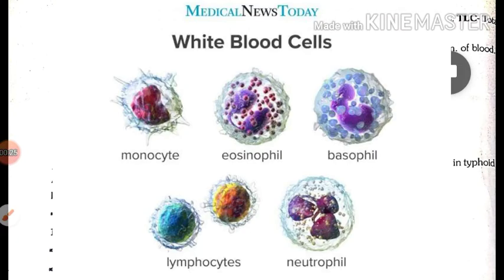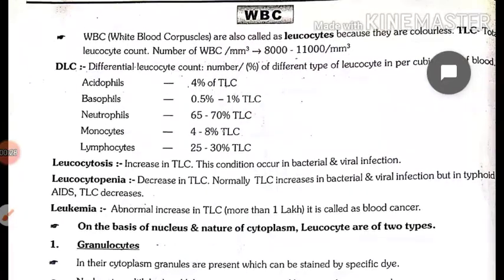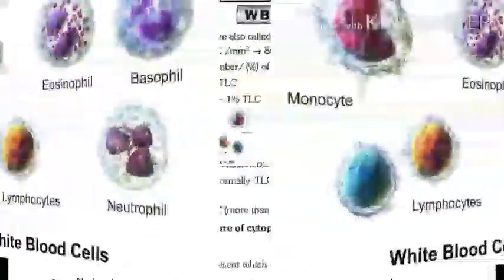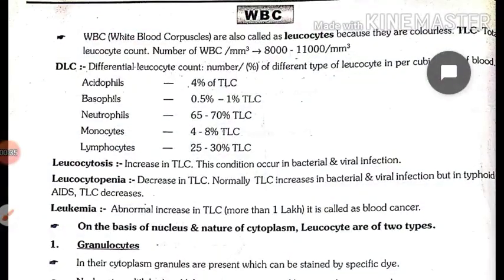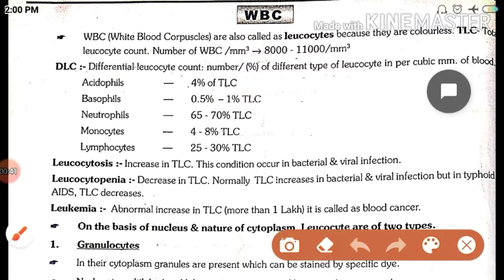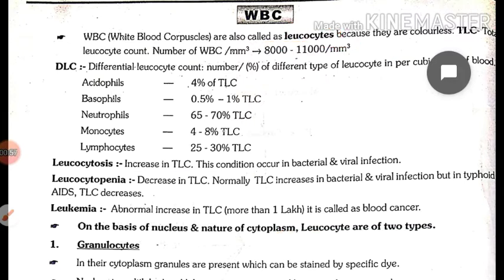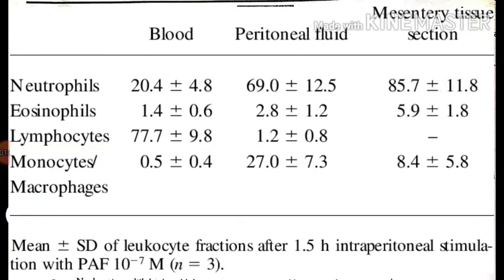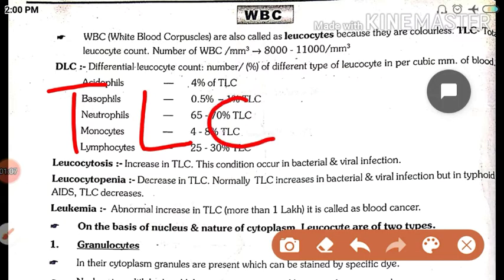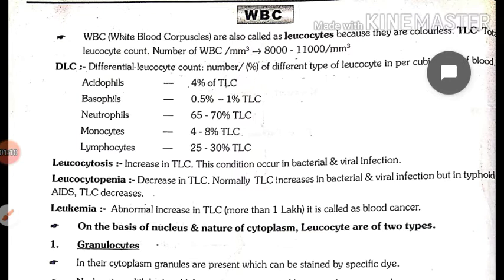Today I teach the next part of blood corpuscles — WBC, White Blood Corpuscles. WBC ko shwet rakta kanka bhi kehte hain. Hum log inhe leukocytes ke naam se bhi pukarte hain, because they are colorless. Leukocytes is a Latin word. Total leukocytes count ko hum log TLC bolte hain — TLC means Total Leukocytes Count.